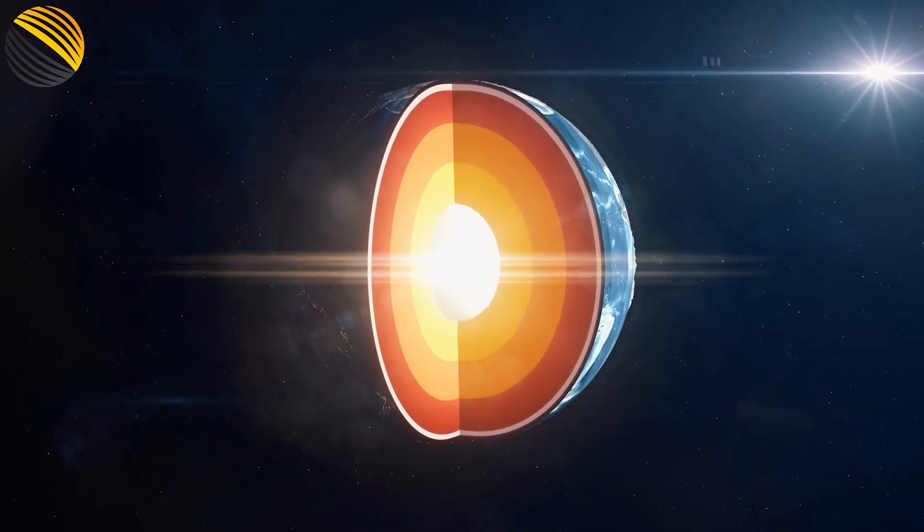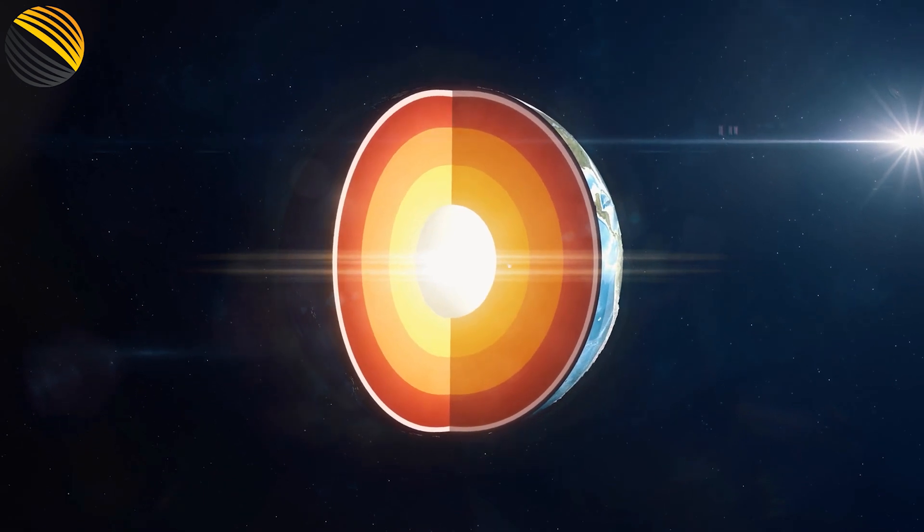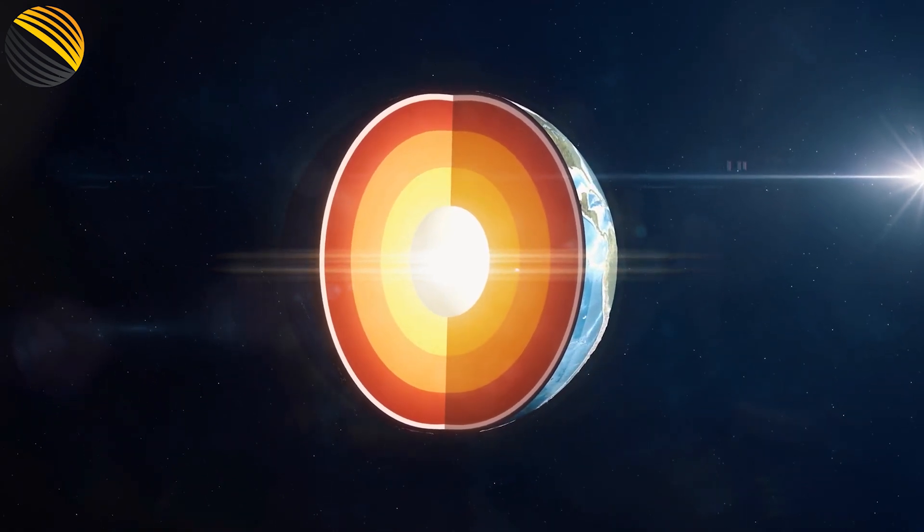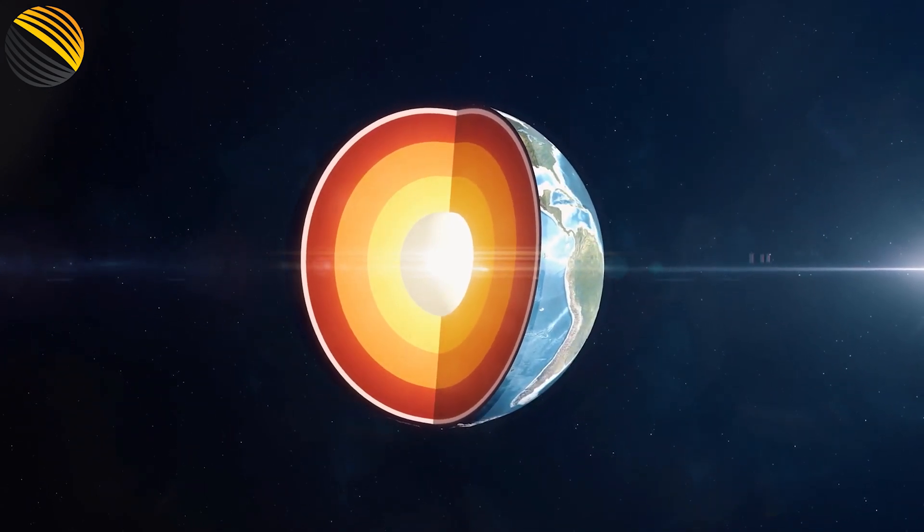The Earth is said to be composed of four primary strata, according to conventional wisdom. Crust, mantle, outer core and inner core are the four layers that make up the planet's interior.